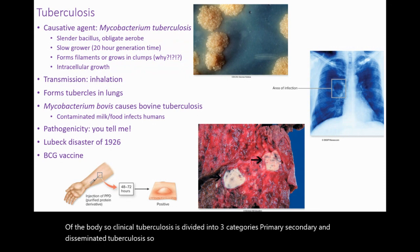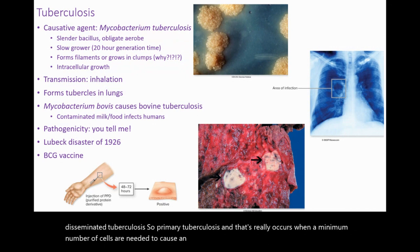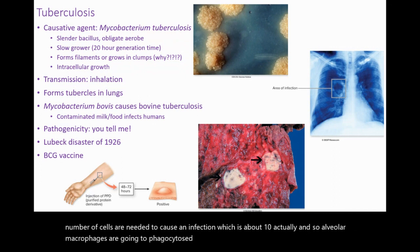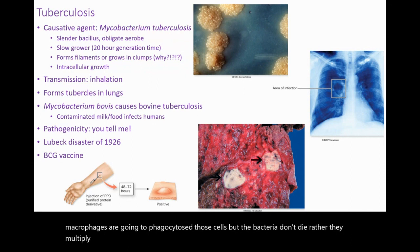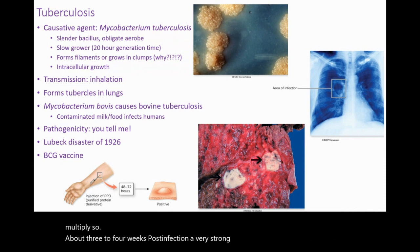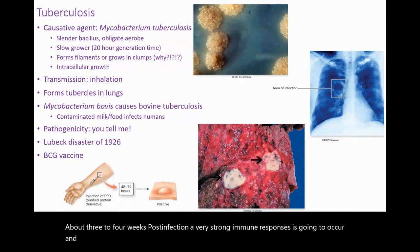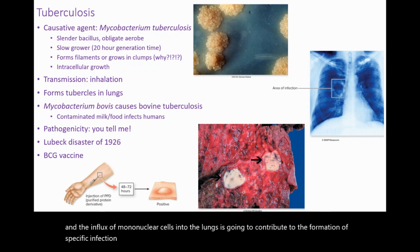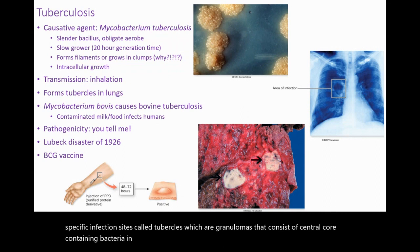Primary tuberculosis occurs when a minimum number of cells — about 10 — are needed to cause an infection. Alveolar macrophages are going to phagocytose those cells, but the bacteria don't die; rather, they multiply. About three to four weeks post-infection, a very strong immune response occurs, and the influx of mononuclear cells into the lungs contributes to the formation of specific infection sites called tubercles — granulomas that consist of a central core containing bacteria in enlarged macrophages, along with an outer wall made of fibroblasts, lymphocytes, and macrophages.